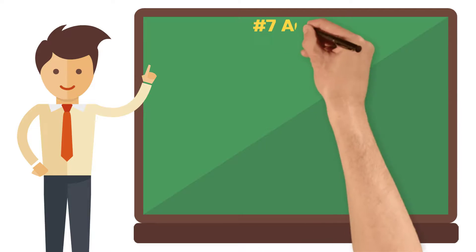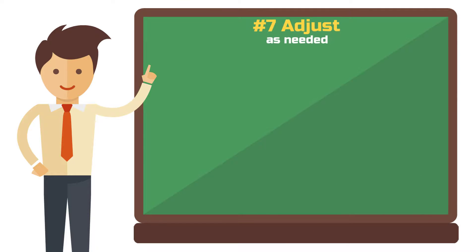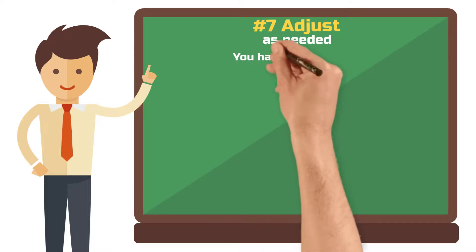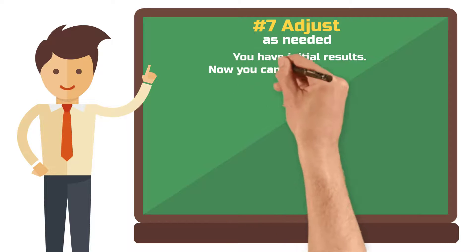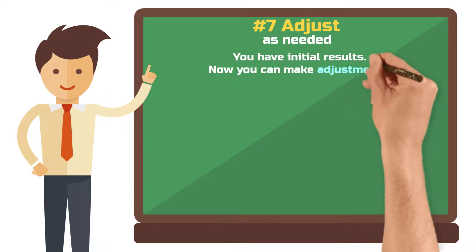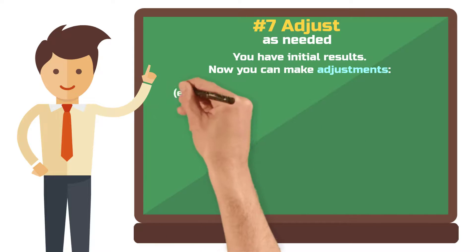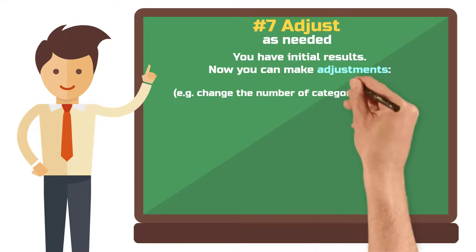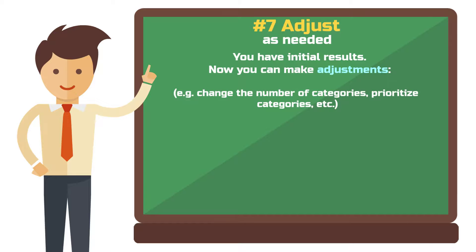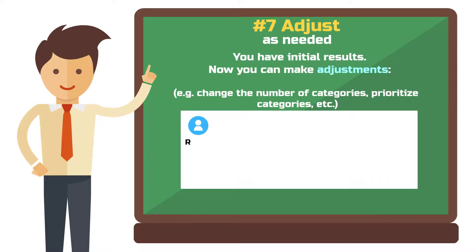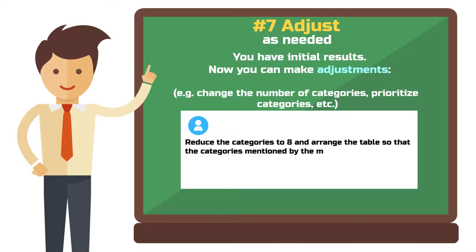Step 7: Adjust as needed. After you've entered your prompt and fed ChatGPT with the transcripts, you can still make adjustments as necessary. If you feel the 10 categories are too few, you can ask for more. If there are too many, you can instruct ChatGPT to prioritize: for example, "Reduce the categories to 8 and arrange the table so that the categories mentioned by the most participants are listed first."